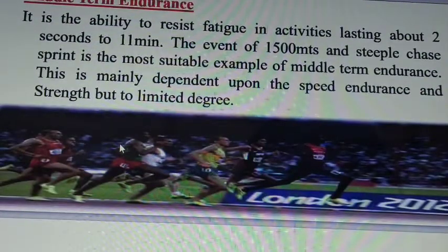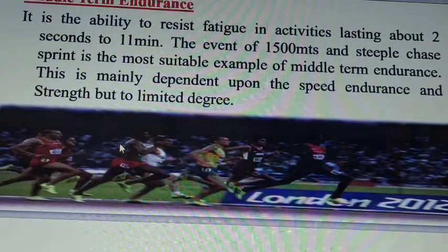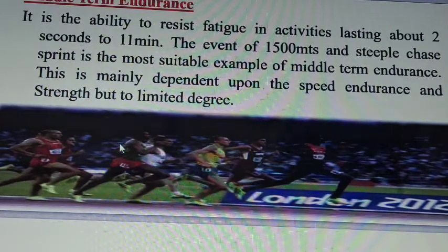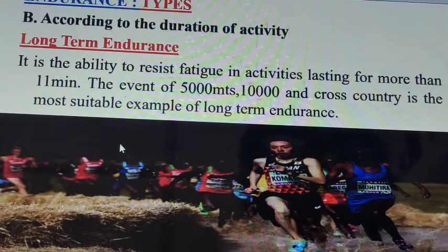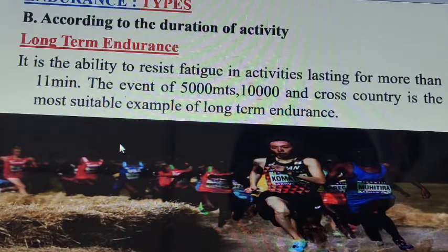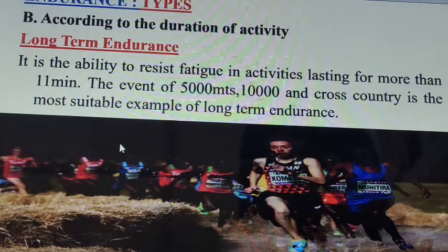Middle-term endurance is the ability to resist fatigue in activities lasting for about 2 to 11 minutes — the 1500 meter race is the best example. Long-term endurance is the ability to overcome fatigue for activities lasting more than 11 minutes. Examples of long-term endurance include the 5000 meters, 10,000 meters, and cross-country runs.